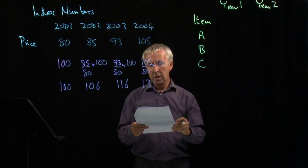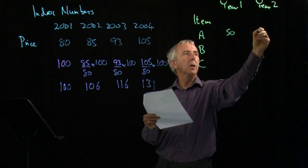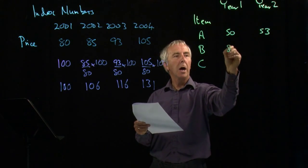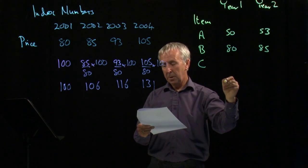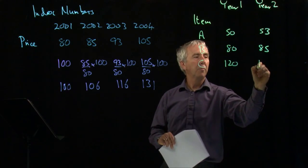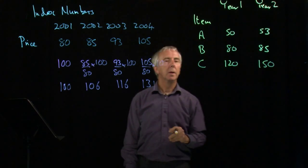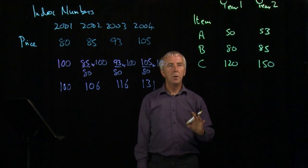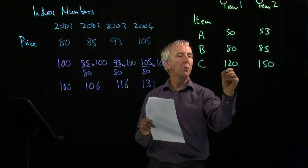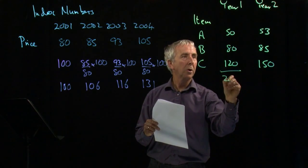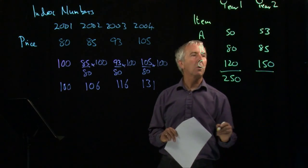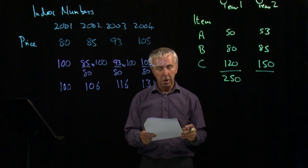The price of A goes up from 50 to 53, B goes from 80 to 85, and C goes from 120 to 150. There are two simple ways of looking at the total inflation effect. We can look at the total cost in year one, which adds up to 250, and the total cost in year two, which is 288.